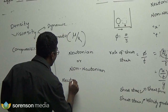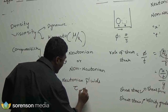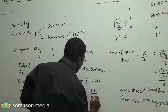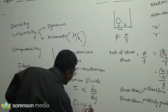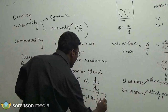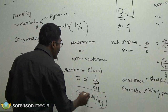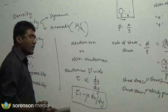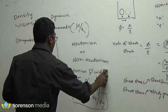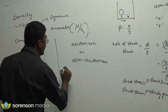Newtonian fluids follow a linear relationship — shear stress proportional to the rate of shear strain. This is given by tau = mu times du/dy. Newtonian fluids follow this relation, so it is a linear relationship between shear stress and the rate of shear strain. Non-Newtonian fluids, as the name suggests, do not follow a linear relationship.